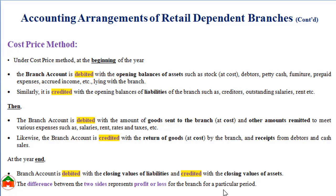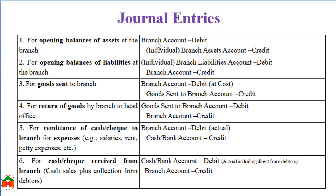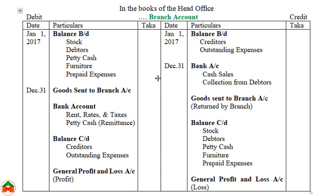The branch account should be debited with the opening balance of assets and credited with the opening balance of liabilities. For goods sent to branch: branch account debit, goods sent to branch account credit. We can get a clear picture from the format of the branch account — the opening balances of assets are shown in the debit side, and when goods are sent, the branch account is debited.